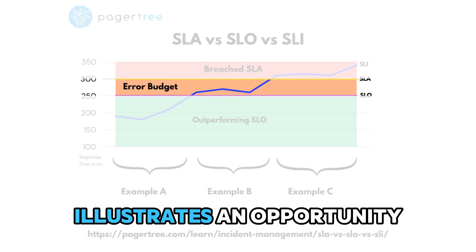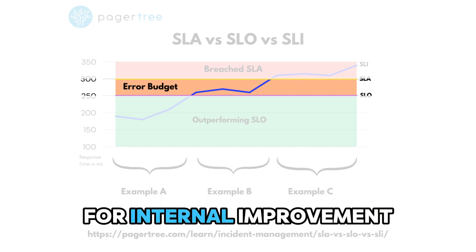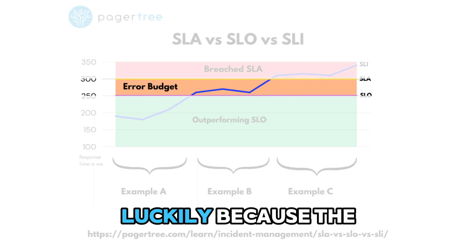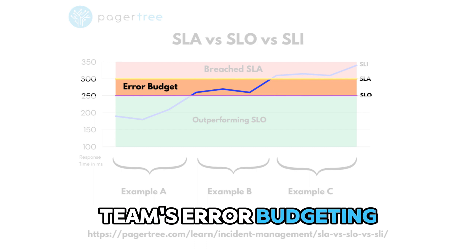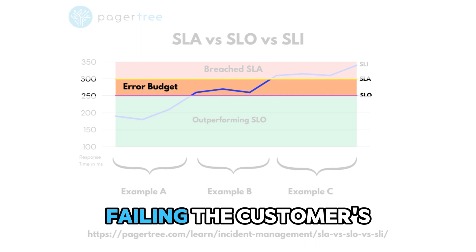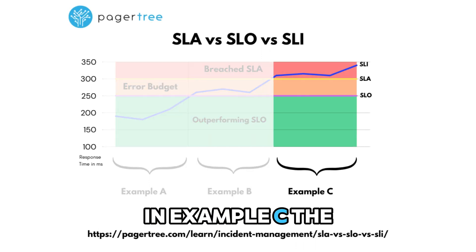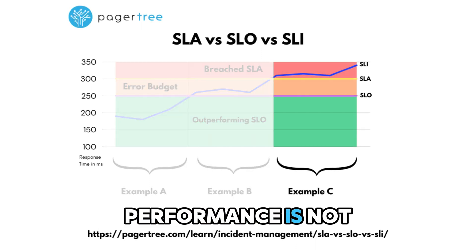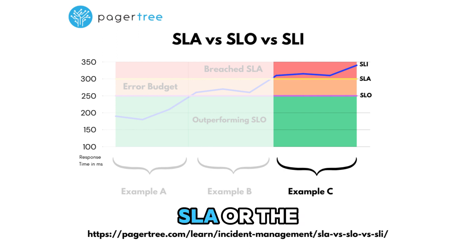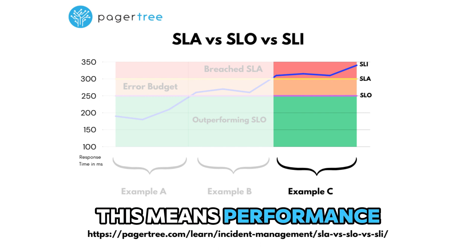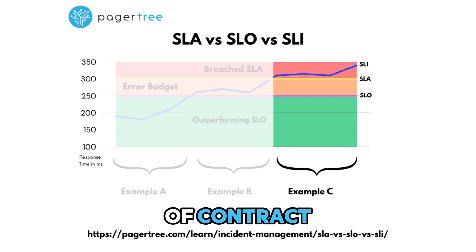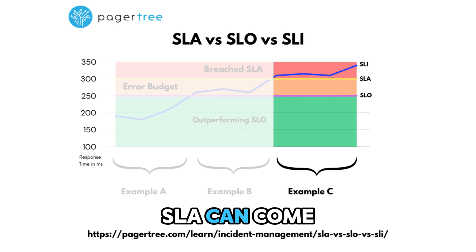Example B illustrates an opportunity for internal improvement. Luckily, because of the team's error budgeting, they are not failing the customer's expectations. In example C, the performance is not meeting the promise made in the SLA or the internal goal set in the SLO. This means performance is in breach of contract and the consequences outlined in the SLA can come into effect.